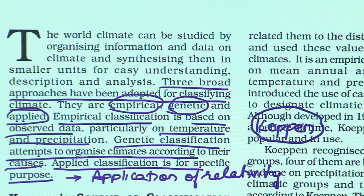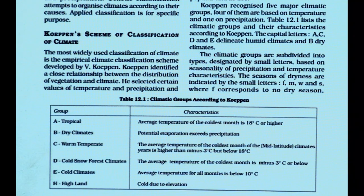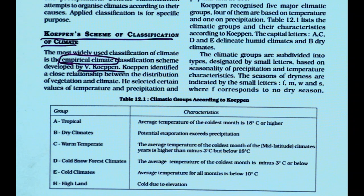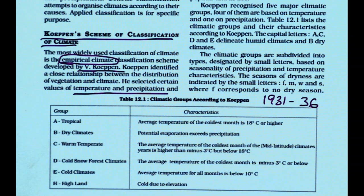Köppen's classification is essentially an empirical one. The original work can be traced to the beginning of the 20th century, but the scheme for which he is popularly known is from 1931 and 1936. He selected values of temperature and precipitation to classify climate and recognized five major climatic groups.